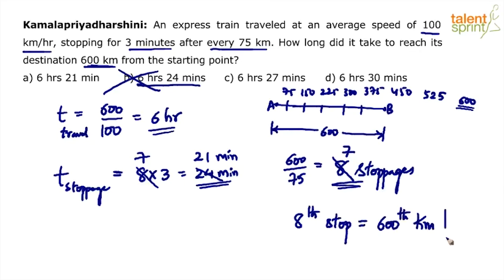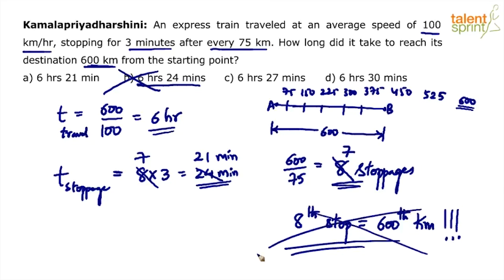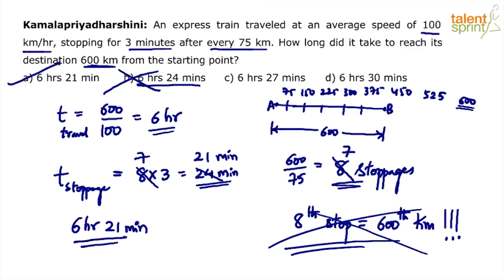After reaching 600 km, we are not worried about how much time it waits there, so we exclude that 8th stop. There are only 7 stops. Therefore, the final answer is 6 hours and 21 minutes. Although this looks like a simple question, many get it wrong. Option A — 6 hours and 21 minutes — is the correct answer.